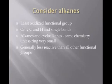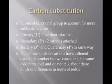Let's start off by considering the alkanes. That's the least oxidized functional group. It has only carbon and hydrogen single bonds. There are alkanes and cycloalkanes, but in general, they're going to have the same chemistry unless the ring size is very small, and they're generally going to be less reactive than all other functional groups. The reason why I like to talk about oxidation level rather than oxidation number is that there's a subtle difference from one alkane carbon to another. And that relates to the number of carbons versus the number of hydrogens that are attached to that particular carbon you are looking at. We call primary carbons ones that are only attached to one other carbon. We call secondary carbons ones that are attached to two carbons, and then, of course, tertiary and quaternary would follow.